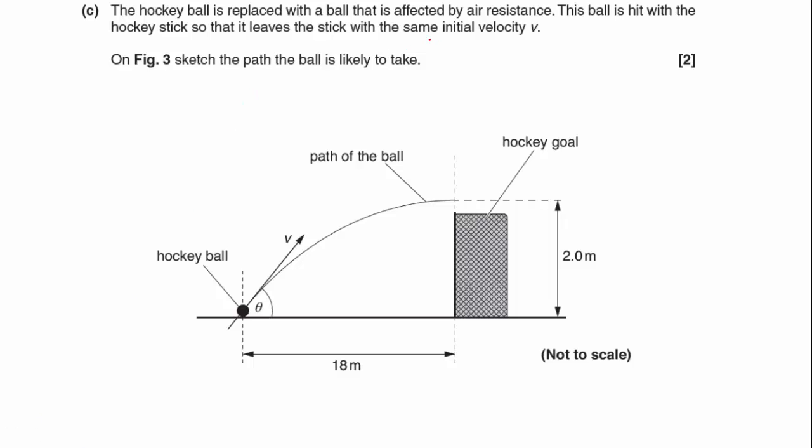The hockey ball is replaced with a ball that is affected by air resistance. This ball is hit with the hockey stick, so that it leaves the stick with the same initial velocity, V. Now, on figure 3, sketch the path the ball is likely to take. They've kind of been leading you down the road because they're working out with the energy. So, now we're going to lose kinetic energy, not just to gravitational, but we're going to lose some to frictional forces.